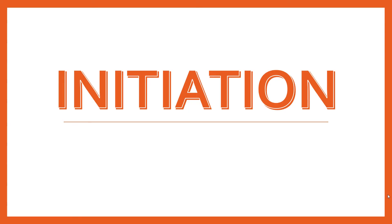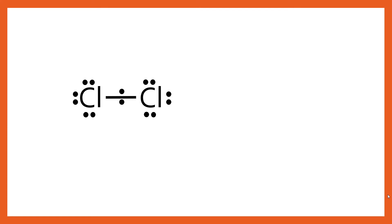Let's start by looking at initiation — getting the reaction started. Here we have Cl₂, and as you can imagine it's not going to be wildly reactive on its own. That bond is going to have to be broken, and I've shown all of the electrons as dots with a line for the bonds. We need some energy input to break it, so we use UV radiation — high energy radiation that is able to break that bond. When the bond breaks, the electrons move in a very specific way.